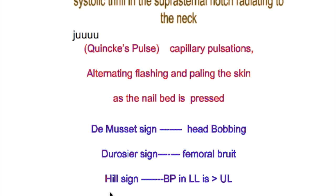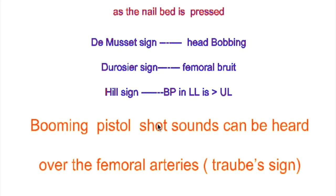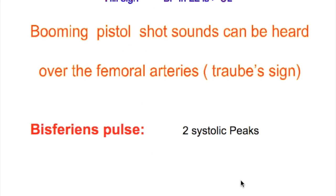The blood pressure in the lower limb is more than that in the upper limb. A booming pistol-shot sound can be heard over the femoral artery, known as Traube's sign.